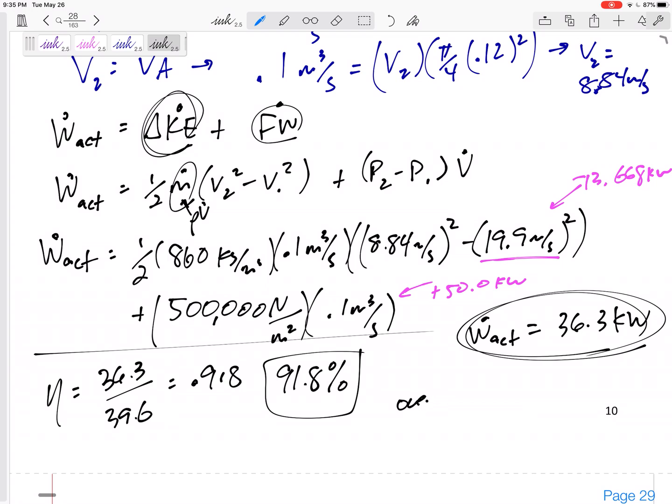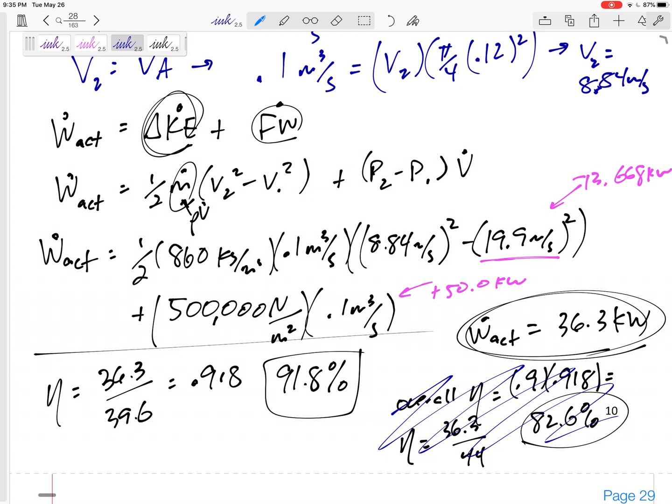Now this one didn't ask for it, but the overall efficiency would be the efficiency of the motor times the efficiency of the pump would be 82.6%. Another way to find this overall efficiency would be 36.3 over the complete 44, which would be also the 82.6%. All right. The question didn't ask for that. So let's don't get into a habit of answering things that it doesn't ask for. But many times it might ask for the overall efficiency of the pump.